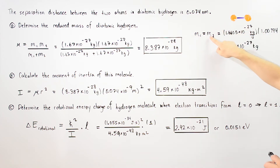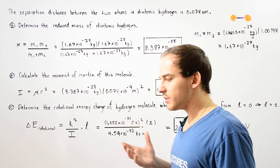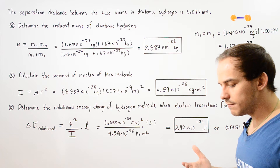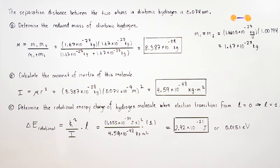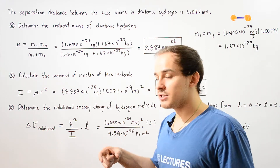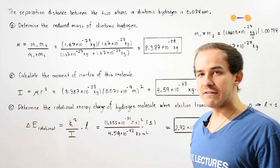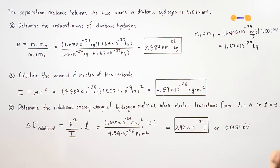Because these are two identical atoms, the mass of atom 1 is equal to the mass of atom 2. From the periodic table, the mass of the H atom is 1.00794 unified atomic mass units. To convert this into kilograms, we multiply by the conversion factor 1.665 times 10 to the negative 27 kilograms per unified atomic mass unit. The units cancel and we are left with the mass of either atom in our diatomic H molecule.